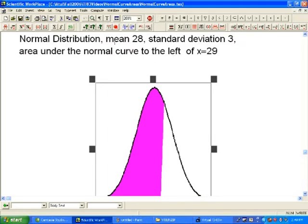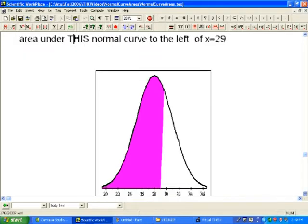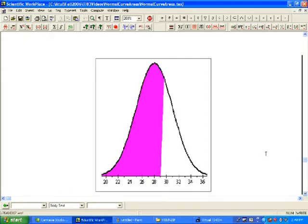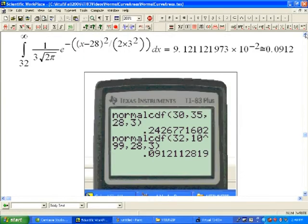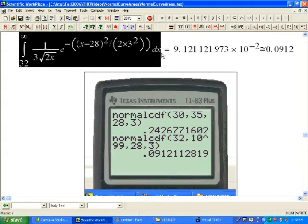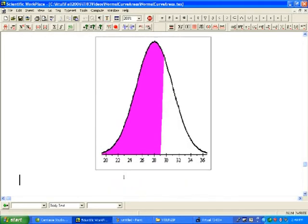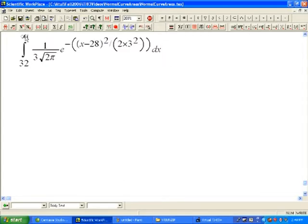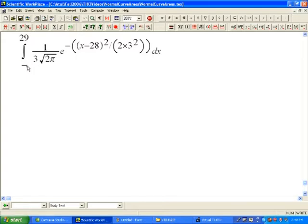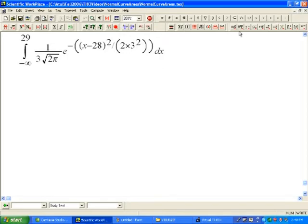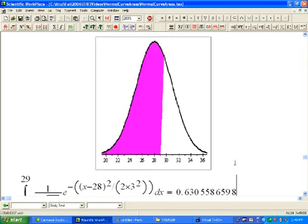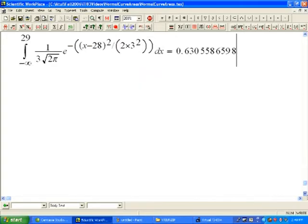Now in this example, we have the same normal distribution and we want the area under this normal curve on the left of x equals 29. If we did this using the same procedure, I will put 29, and here I am going to put negative infinity. That's the area to the left, approximately 0.6306.